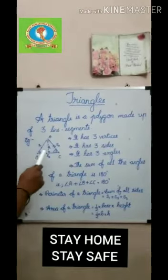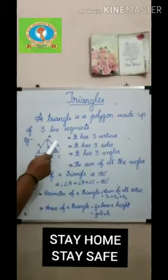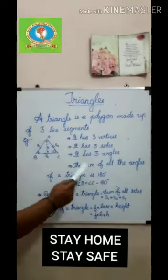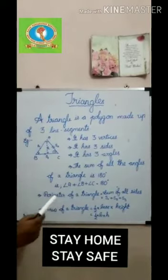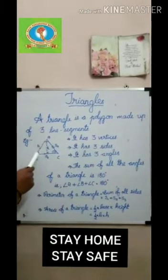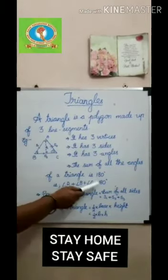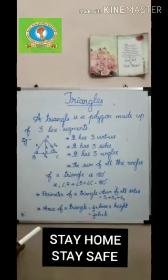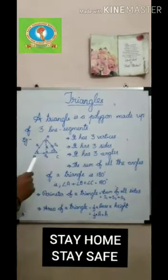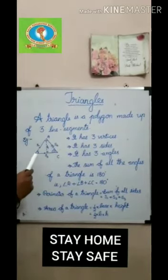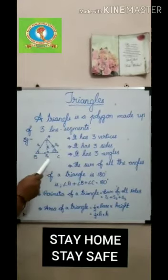In a triangle, the sum of all three angles is equal to 180 degrees. That is, angle A plus angle B plus angle C is equal to 180 degrees. To find the perimeter of a triangle, we have to add all the sides.